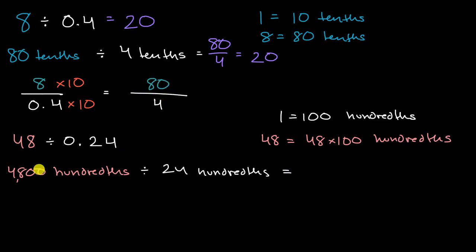Well, same logic as we used up here. If I have 4,800 of something, and if I'm dividing it into equal groups of 24 of that something, well, I'm going to have 4,800 divided by 24 equal groups.